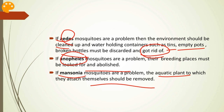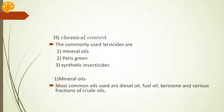The source reduction methods generally produce results that are permanent and are quite effective initially. Coming to chemical control, the commonly used larvicides are mineral oils, Paris green, and synthetic insecticides.